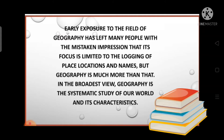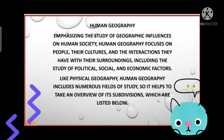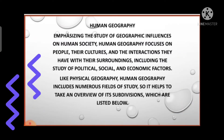Under population geography we have rural and urban geography. It studies population growth, distribution, density, sex ratio, migration, and occupational structures. Settlement geography studies the characteristics of rural and urban settlements — what population distribution, density, and growth rate look like.